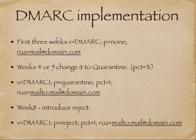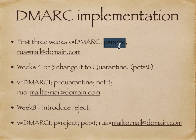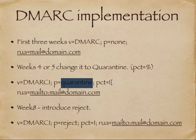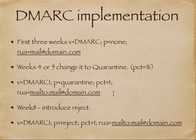For DMARC implementation: in the first 3 weeks, set the DMARC policy to none and set a RUA mail address to monitor. In weeks 4–5, change none to quarantine and add PCT=1, so the quarantine policy applies to just 1% of emails. By week 8, change quarantine to reject — but first gradually increase PCT from 1 to 5, 10, 25, 50, and 100%. Then when switching to reject, again start at 1% and ramp up to 100% to ensure no legitimate mail is lost.